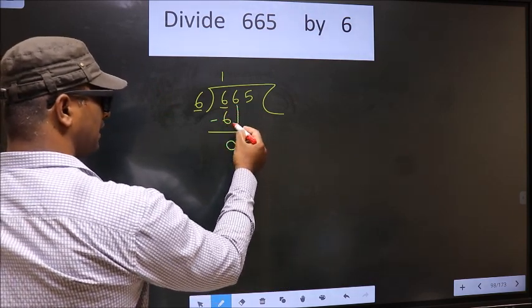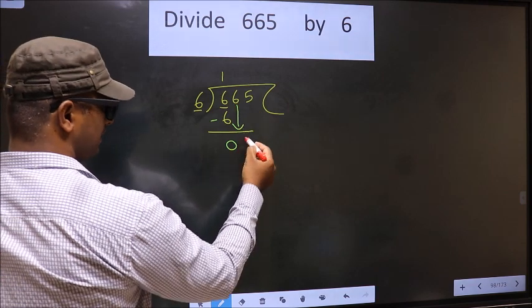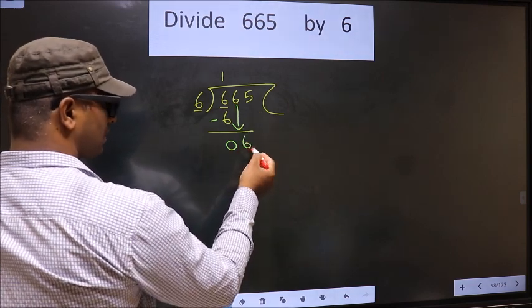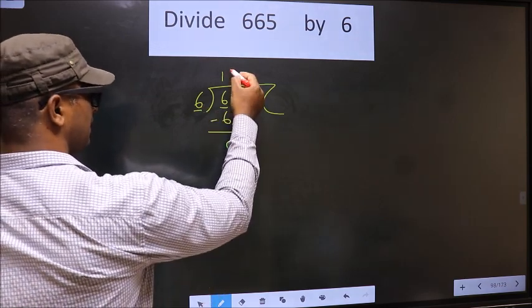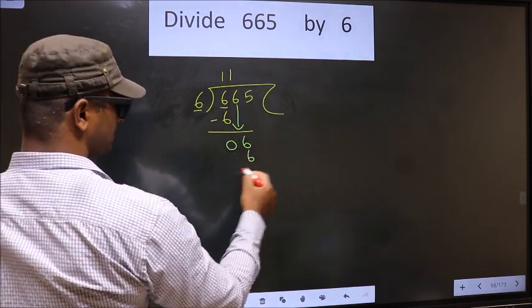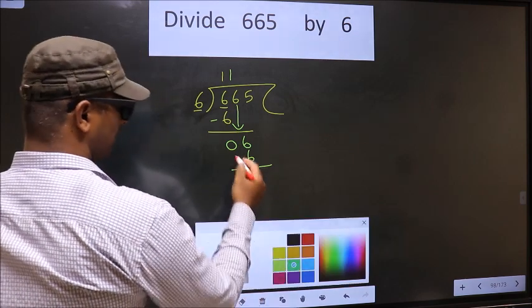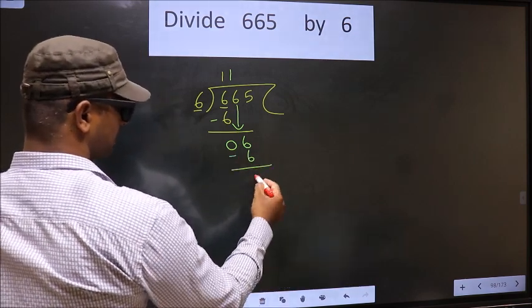Now bring down the beside number, that is 6 down. Here we have 6, here also 6. When do we get 6 in the 6 table? 6 once is 6. Now subtract: 6 minus 6 is 0.